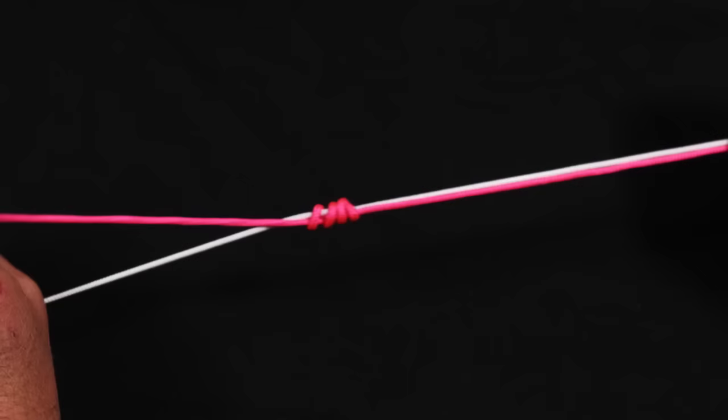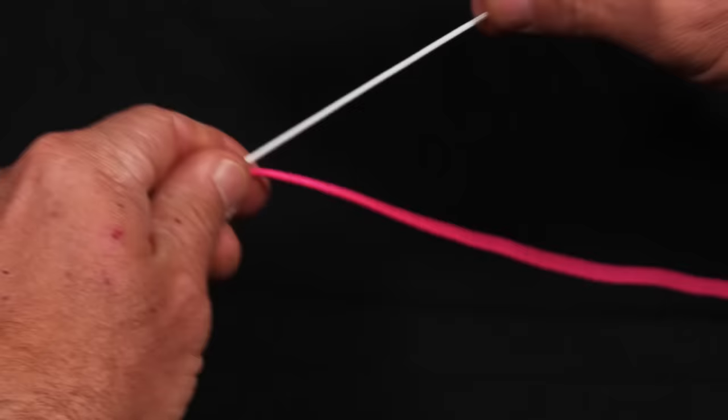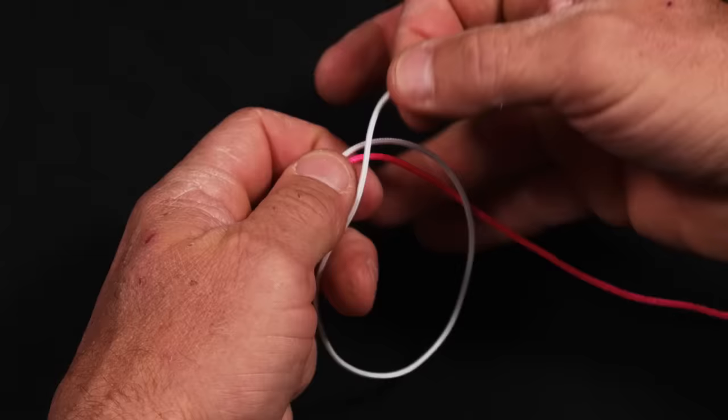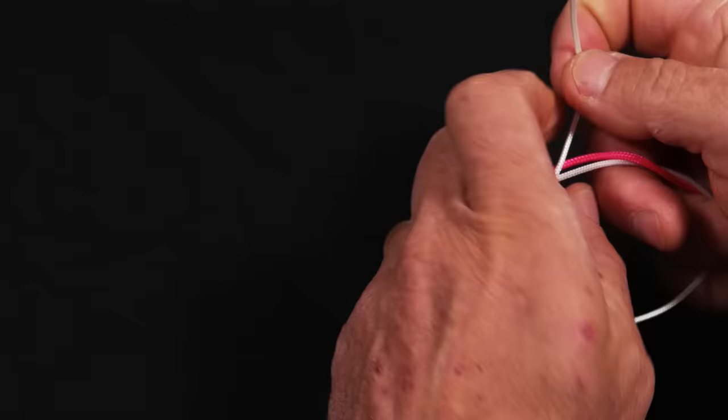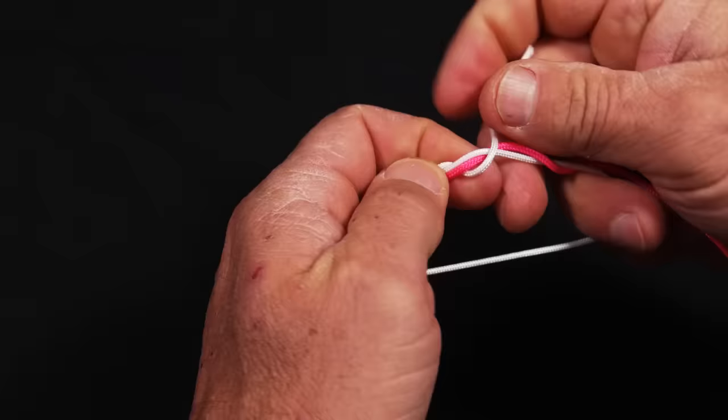I'm going to leave that fairly loose, and I'm going to come over here to the white line, the other line, and I'm going to do the same thing. I'm going to make a loop like that, I'm going to go one, two, three, four times around.